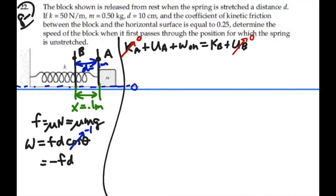So now we have that the potential energy at A, one-half kx squared plus the work done along the way, which is negative frictional force times distance, equals kinetic energy at B, one-half mass times velocity at B squared.